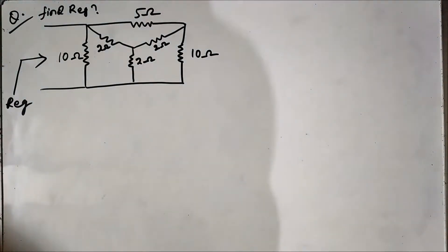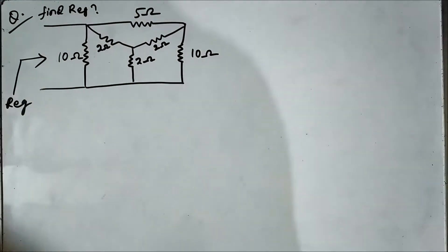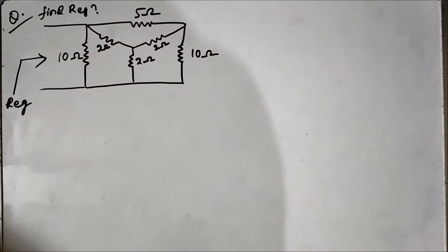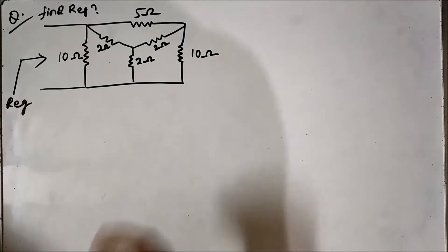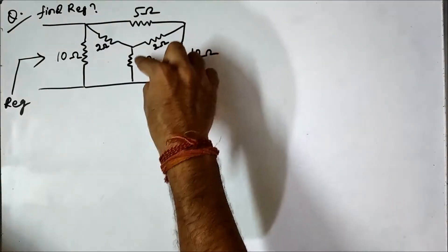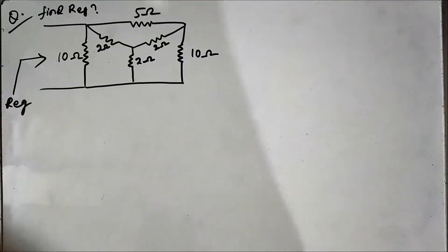The important thing you have to immediately take notice of is this star-shaped structure. If you just try to solve it without thinking of star to delta transformation, then it will be very difficult. You cannot proceed in any way. You may think that this 10 ohm and this 2 ohm and this 2 ohm are connected in series or in parallel, or then try to solve this 5 ohm, but it is all wrong. You have to use the star to delta transformation.